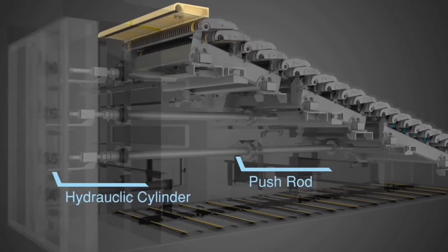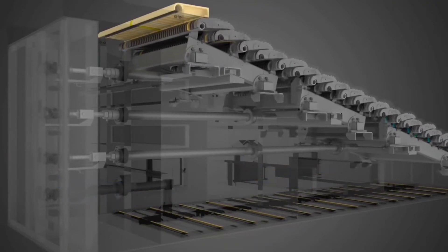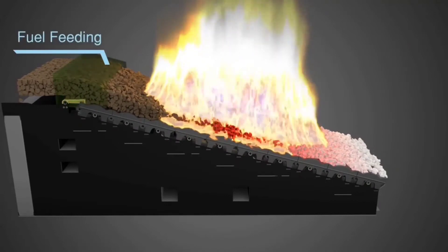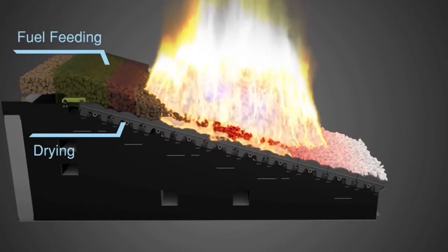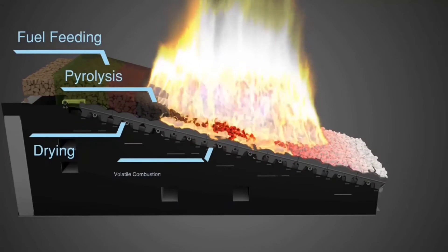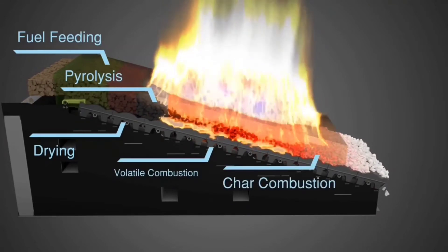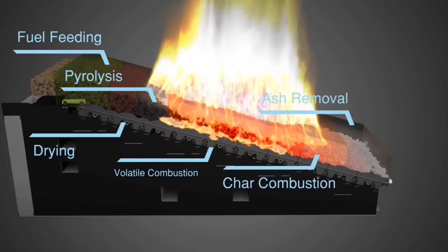Alternate movement of grate blocks pushes the fuel through distinct combustion zones of the grate: fuel feeding and drying, pyrolysis, volatile matter release, char combustion, and ash removal.